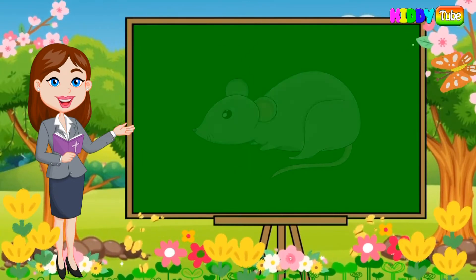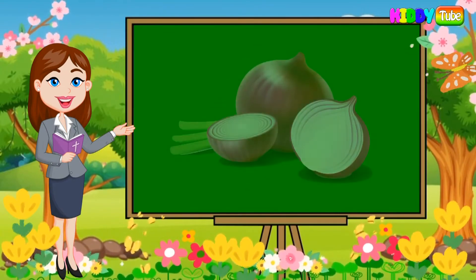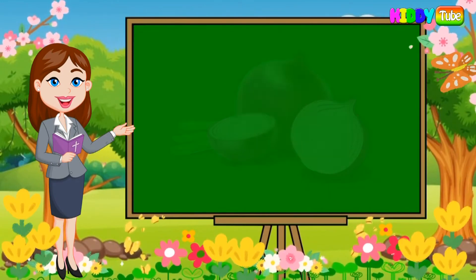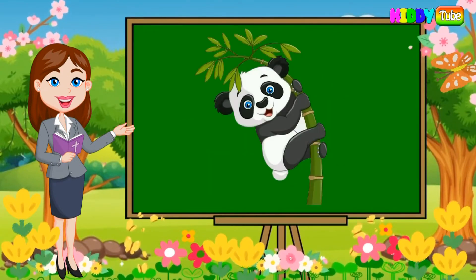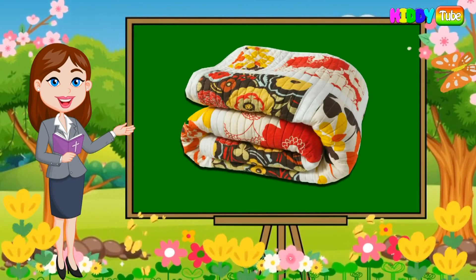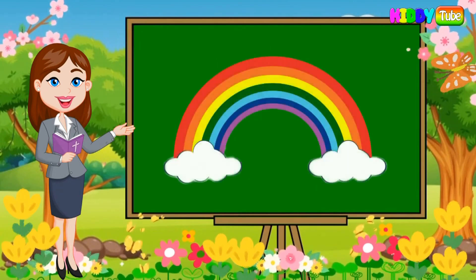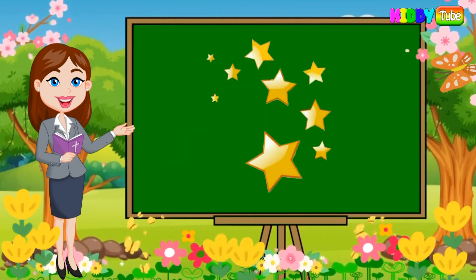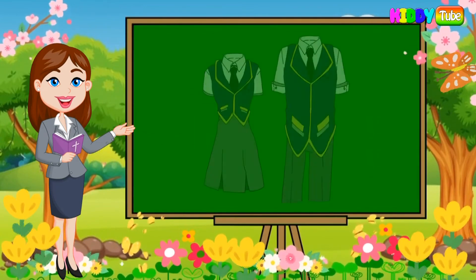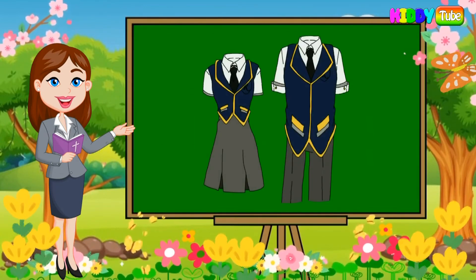N is for nurse, O is for onion, P is for panda, Q is for quilt, R is for rainbow, S is for stars, T is for train, U is for uniform.